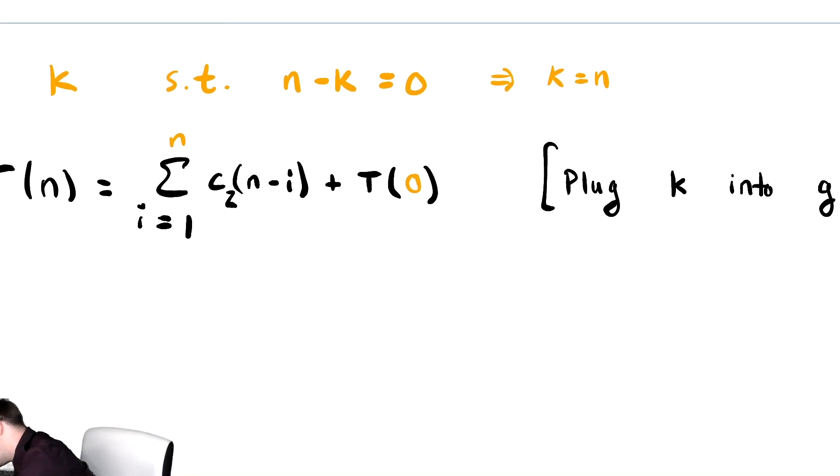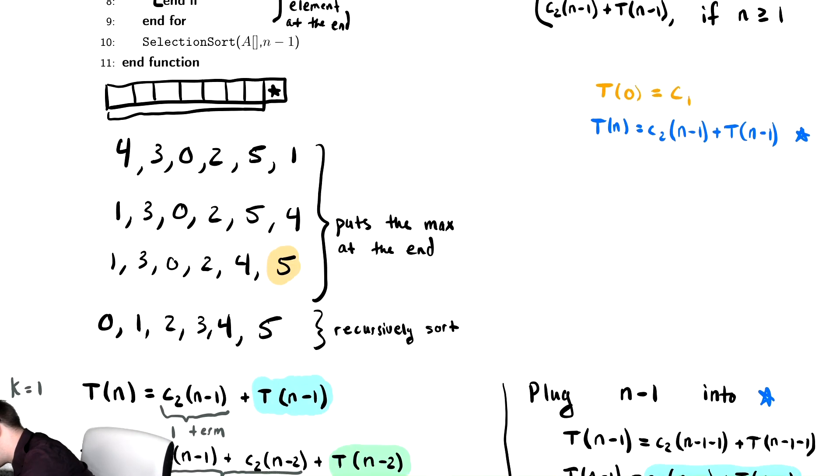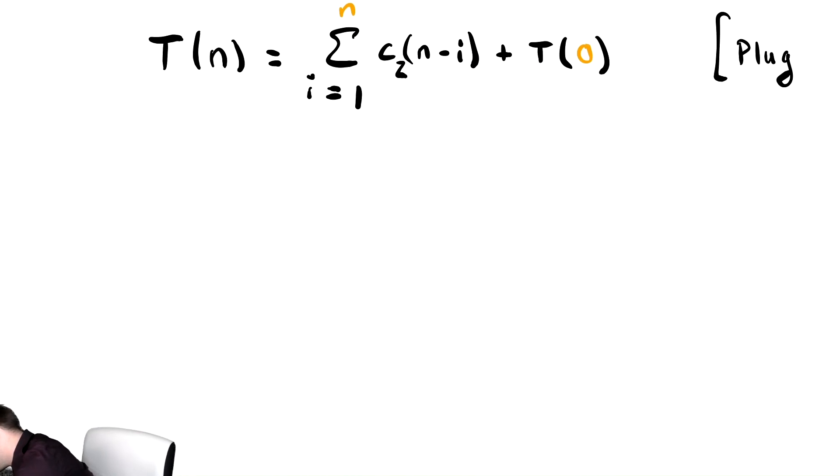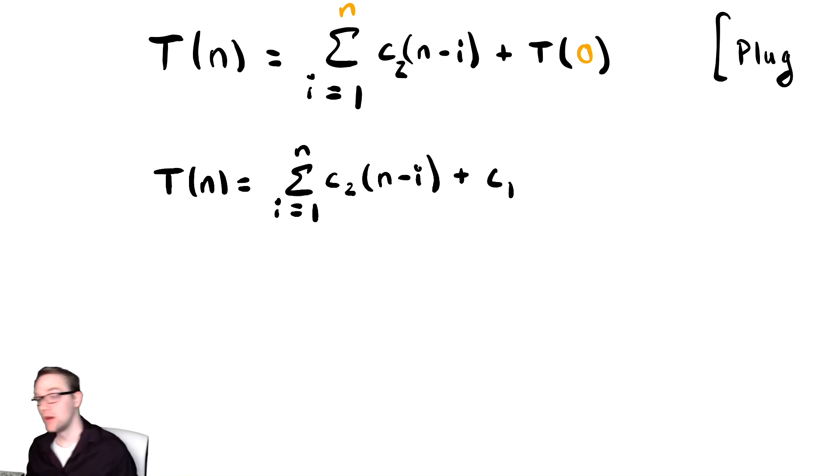We know T of 0, though. If we go way back up, T of 0 was what we called C1. So this is equal to the sum from i equals 1 to n of C2 times n minus i plus C1. And now it turns out we are now done with the recursion because we are now in summation territory. If you look at this, I could have given you this problem way back when we first introduced summations and we could have theoretically solved it.